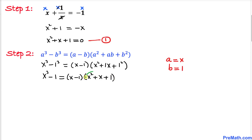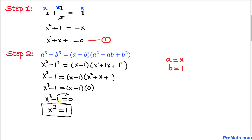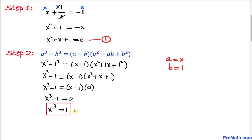We can see that the factor x squared plus x plus 1 equals 0 from equation 1, so we replace it by 0. Therefore x cubed minus 1 equals x minus 1 times 0, and zero times anything is 0. So we get x cubed minus 1 equals 0, which means x cubed equals 1.